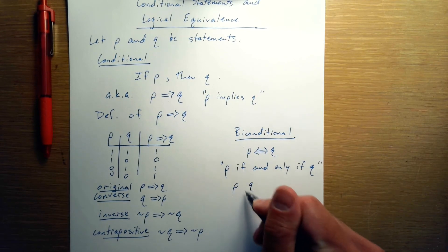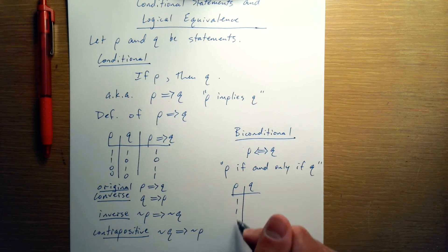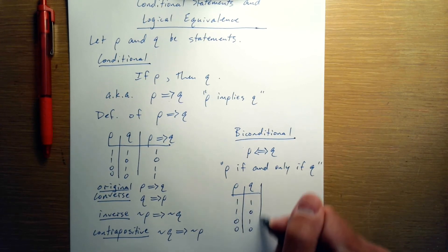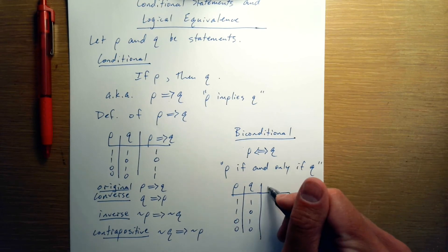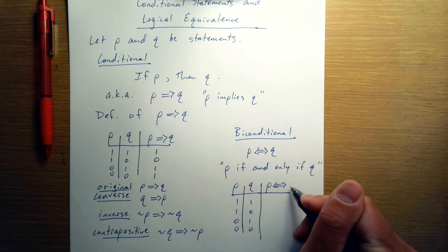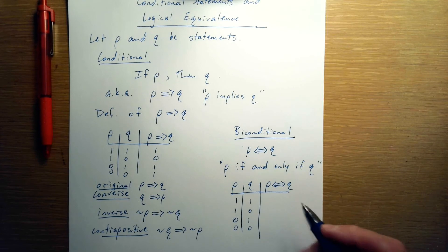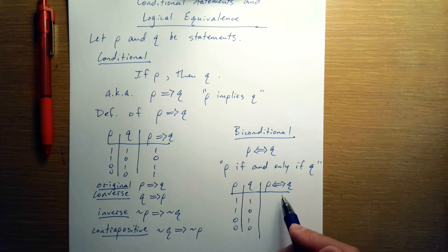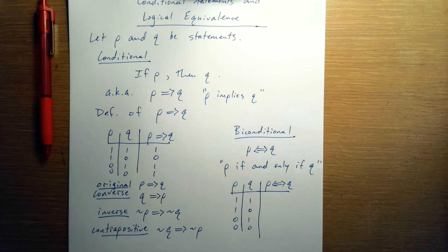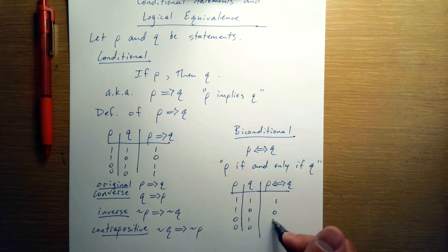And we can define that with a truth table as well. Since it has two inputs, its truth table looks like this. P if and only if Q is going to be true when P and Q both have the same truth value. They could both be true or they could both be false. And in all other cases, the biconditional is false.